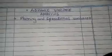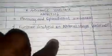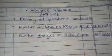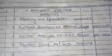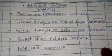Hello students. In this video we are looking at advanced variance analysis. We'll be discussing: number one, planning and operational variances; number two, further analysis on material usage variance; number three, further analysis on sales volume variance; number four, market share and size variance; and lastly, idle time variance.